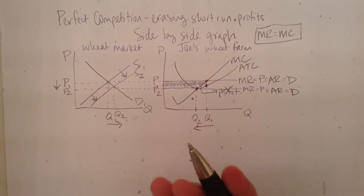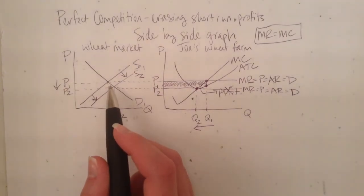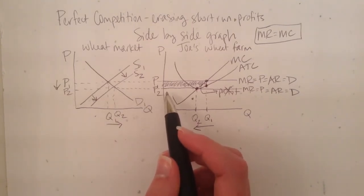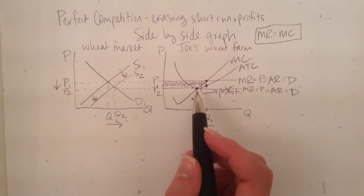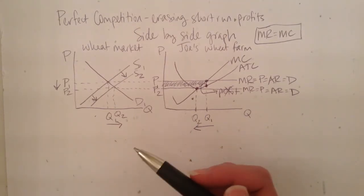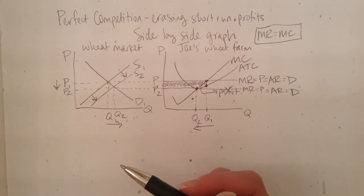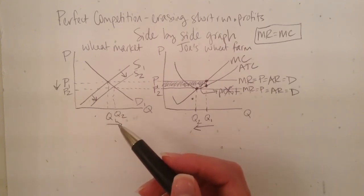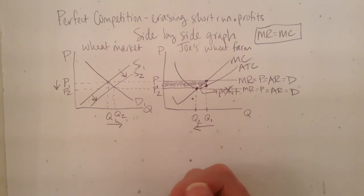So the way I drew it, it worked out perfectly, but basically, in real life, the supply will continue to increase until you get to this point where firms are no longer earning any economic profit. Because once you get to that point, there's not going to be any more incentive for new firms to enter the industry, so the supply will stop increasing at that point. Thanks for joining me today.